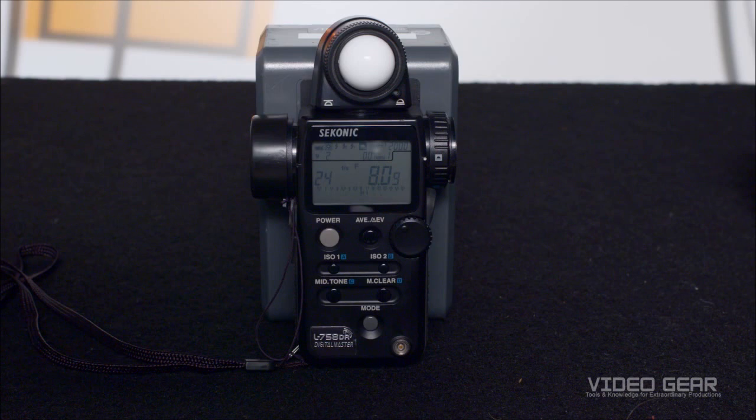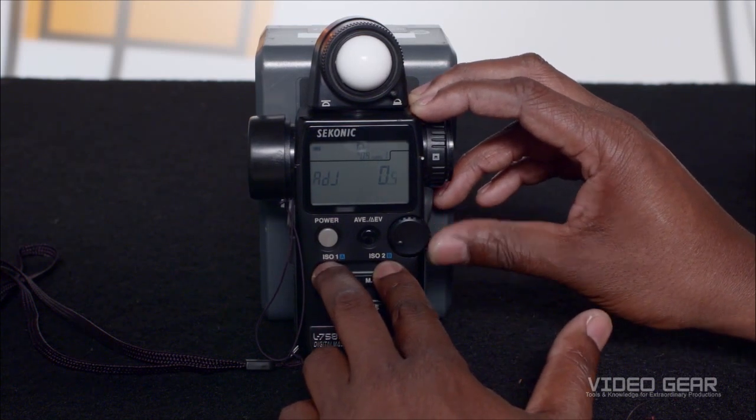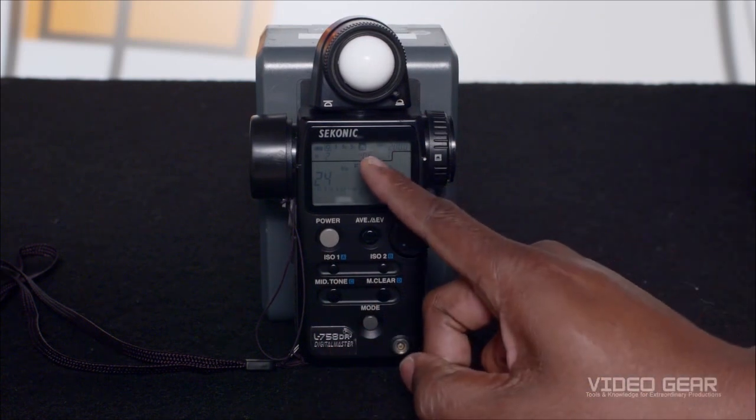The light meter we're using allows you to offset the exposure in 1/10 stop increments to compensate for your camera and lenses. With this particular light meter, we press both ISO buttons and spin the side knob to compensate for the 0.6 stop difference we just measured.